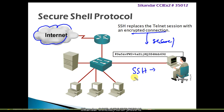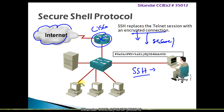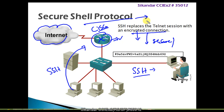SSH is the most common method to provide a secure connection because the connection established will be encrypted. It provides more security than Telnet. However, on Cisco routers, SSH is not enabled by default — we need to add specific commands to enable remote access via SSH. In this section, we are going to see how to configure SSH protocol on a Cisco router and practically verify it.